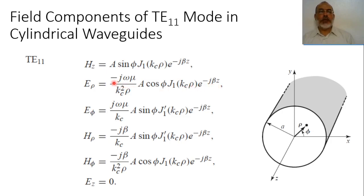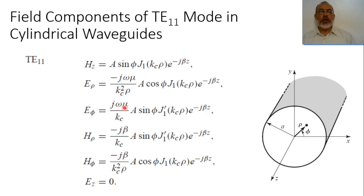The multiplication coefficient is −jωμ/k_c². For ∂Hz/∂ρ, this gives k_c J1', and since we already have k_c and k_c² terms, it simplifies to 1/k_c. So E_phi is jωμ/k_c times A sin(φ) times J1'(k_c ρ) e^{−jβz}.